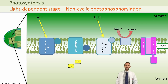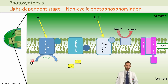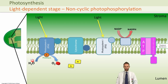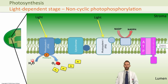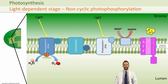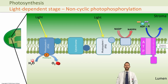The lost electron must be replaced. This is where water comes in: light is used to split water in a process called photolysis, which replaces the electrons in photosystem two and is the source of our oxygen waste gas, which diffuses out of the cell. Photolysis also adds extra hydrogen ions into the lumen. These hydrogens build up, creating an electrochemical gradient, and flow back through ATP synthase, converting ADP and phosphate into ATP.